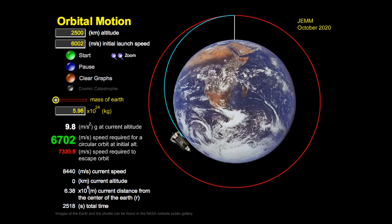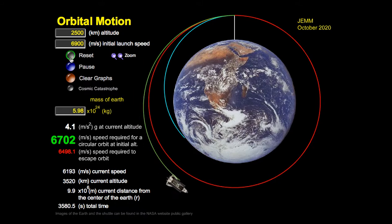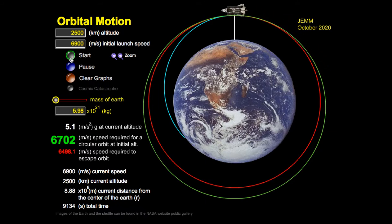If we dial in a higher speed, it's no longer circular. Now the object orbits in an oval or an ellipse. So today we'll be understanding how that 6,702 meters per second is actually determined. That's our goal.